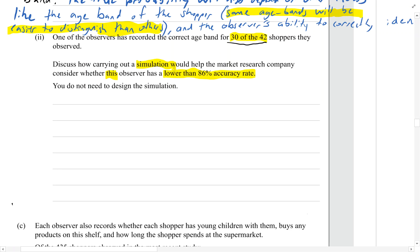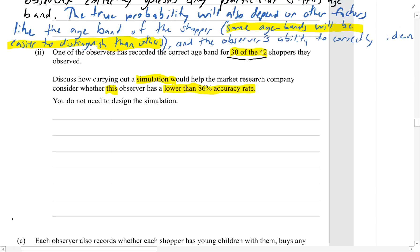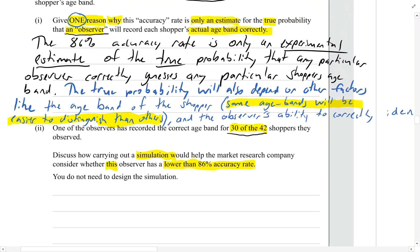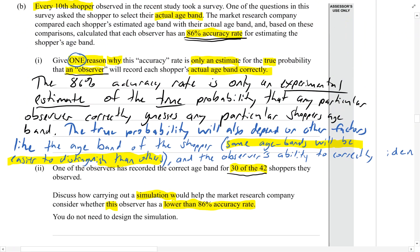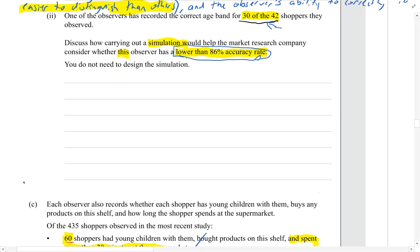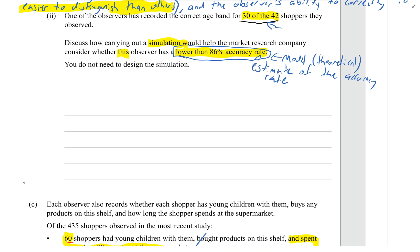The 86% accuracy rate came from earlier in the question, where we were told that was the average accuracy rate across the five observers in this study. So 86% is now the model or the theoretical estimate of the accuracy rate, because it's the rate across all five observers. And we're trying to see — is this person actually worse, or did they just have a bad day?